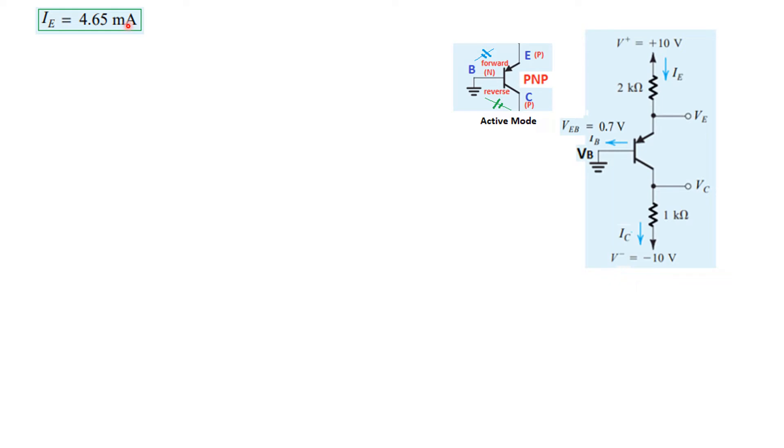So we have the current IE and we have found the voltage VE. Now, the other parameters. Since the base emitter junction is forward biased, so this is forward biased, the transistor will be either in active mode or in saturation mode. So, in this case, as we mentioned, we have to first assume it to be in active mode.